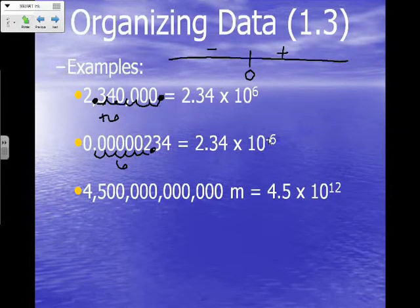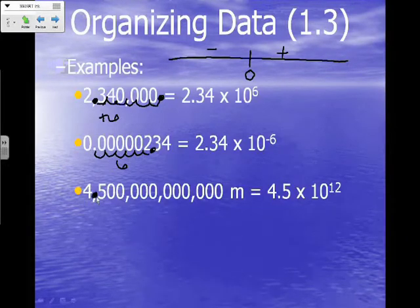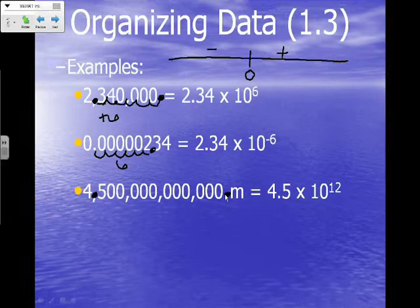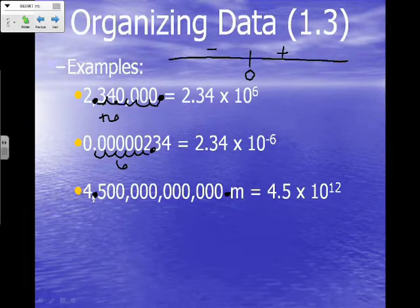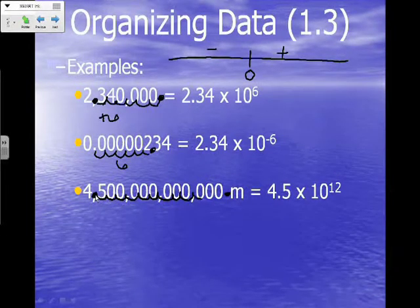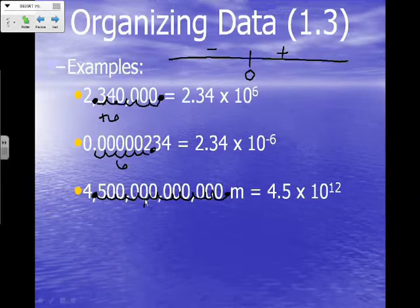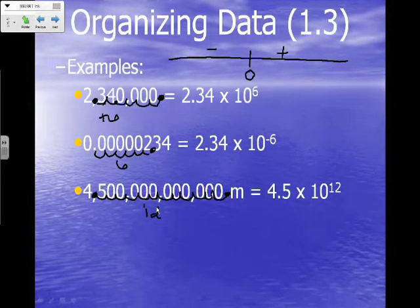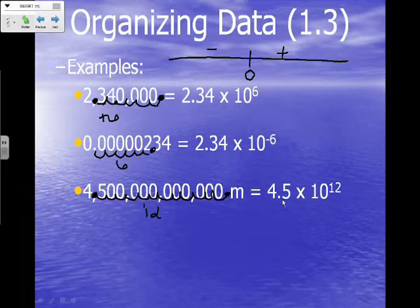Our third example is a very large number, so that's why we want to use scientific notation. We place our new decimal, and we place our old decimal at the very far right since it's not given to us. Then we count our jumps — so that means we have 12 jumps, and we moved right on the number line. So our exponent is going to be a positive 12. Our new number is 4.5 times 10 to the 12th power.